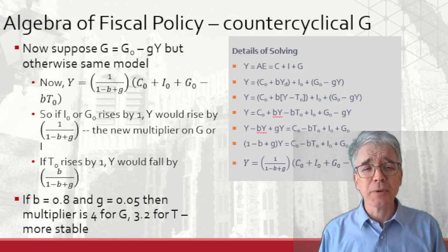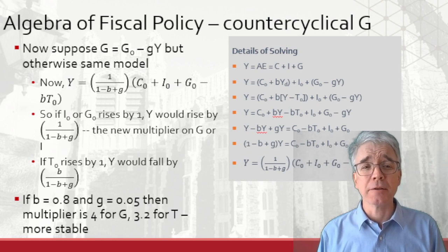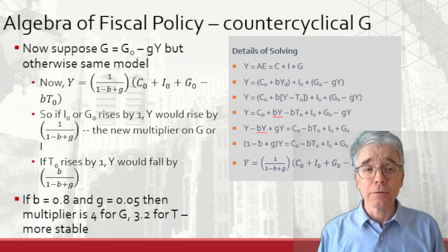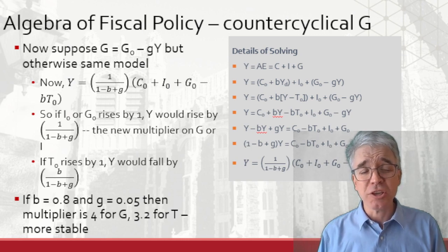Now suppose we have some counter-cyclical government spending. That means that as income goes down in a recession, the government spends more. Things like paying unemployment benefits. Model that as G equals G naught minus little g Y.